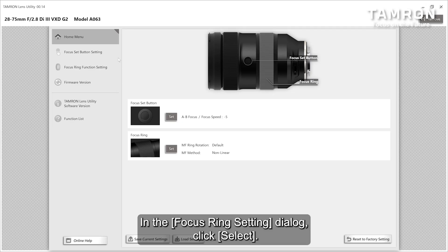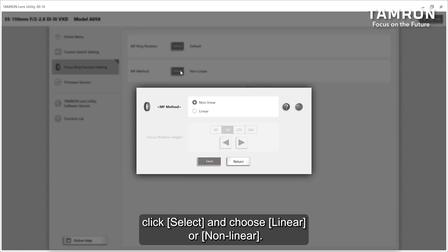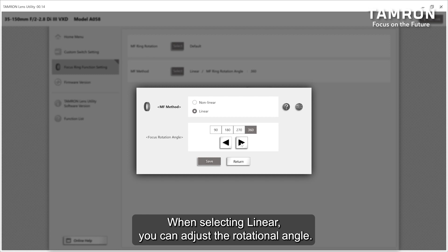In the focus ring setting dialog, click select in the manual focus method section. Click select and choose linear or nonlinear. The default setting is nonlinear. When selecting linear, you can adjust the rotational angle. The default setting is 180 degrees.